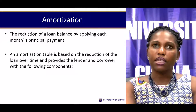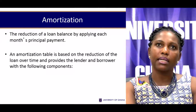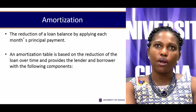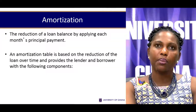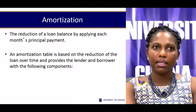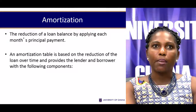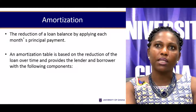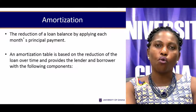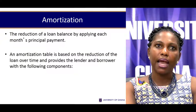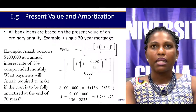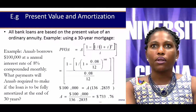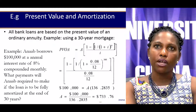Let's look at amortization first. Amortization typically refers to the reduction of a loan balance by applying each month's principal, which is part of a fixed payment plan instituted when the loan facility is undertaken. The amortization schedule or table is based on the reduction of the loan over time and provides the lender and borrower with the relevant components. All bank loans are normally based on present values of ordinary annuities.